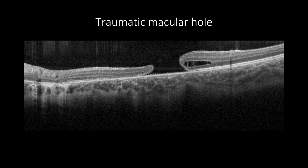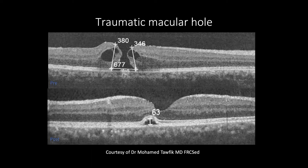OCT is very useful in assessing a traumatic macular hole, which will show a full thickness macular defect with or without intraretinal cystic changes and elevated edges. OCT can accurately measure traumatic hole size, as a smaller hole size has a better chance for spontaneous closure — as in this case of an 18-year-old boy presented with a traumatic macular hole, where within six months follow-up there was spontaneous closure of the hole.